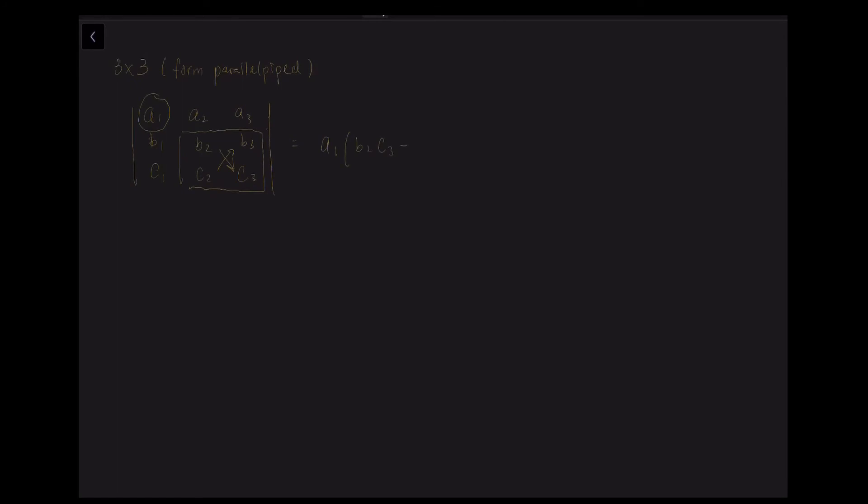And we will times A1 with the determinant that we use on the 2 by 2 matrix: B2 times C3 minus C2 times B3. And the second step is minus A2. And again, we choose each corner's numbers, which is B1 times C3 minus C1 times B3.